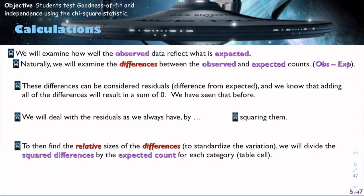When we do our calculations, we're looking at the observed data and asking ourselves, does this reflect what we expected? So naturally, we look at the differences between observed and expected counts. This should start sounding familiar. Last time we talked about this was in chapter seven and chapter eight when we were looking at two variables and the residual. The differences can be considered residuals, differences from expected. We know that adding all of the differences will result in a sum of zero.